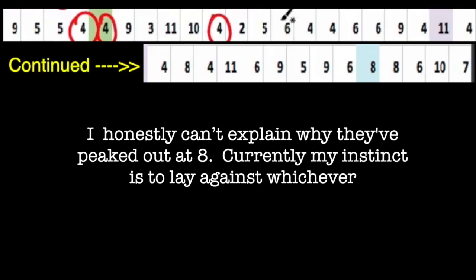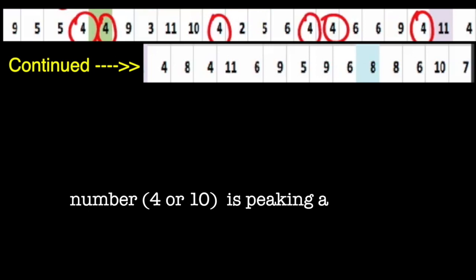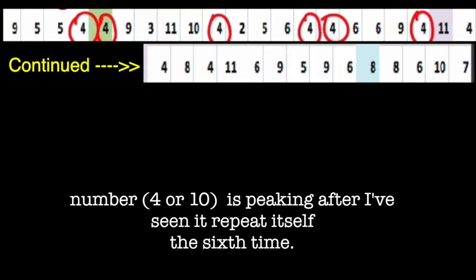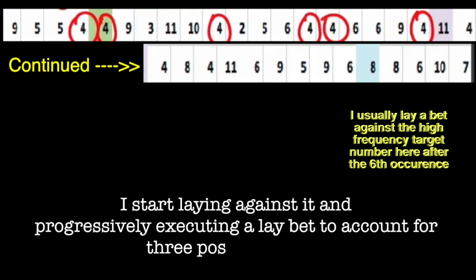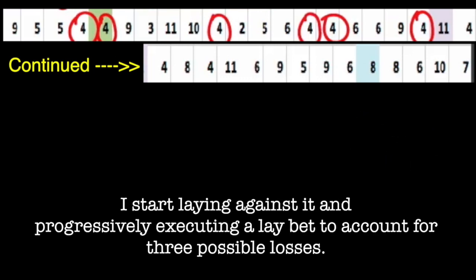I honestly can't explain why they've peaked out at eight. Currently, my instinct is to lay against whichever number, four or ten, is peaking after I've seen it repeat itself the sixth time. I start laying against it, and progressively executing a lay bet to account for three possible losses.